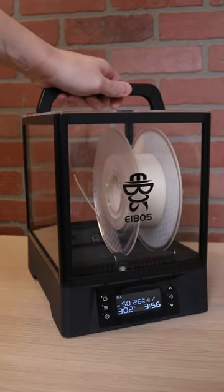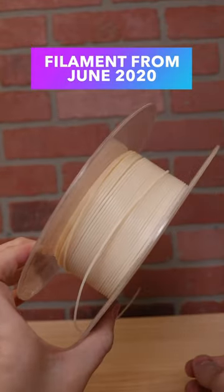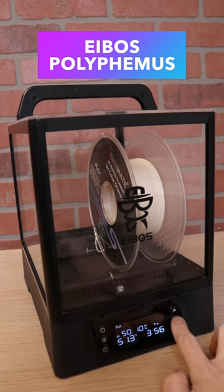Let's take a look at the impact a filament dryer can have on old filament. This is three and a half year old UV color changing filament, and I'm using the EIBOS Polyphemus to dry it.